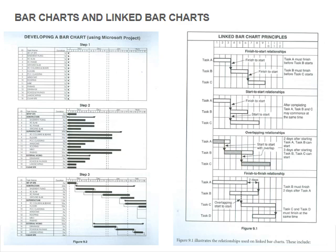When doing your scheduling, you list your items - we spoke about that previously - then you add your time, then you link them to each other. The link bar chart principles we've spoken about include finish-to-start, start-to-start, overlapping relationships where you have a bit of a delay, and finish-to-finish relationships as well.